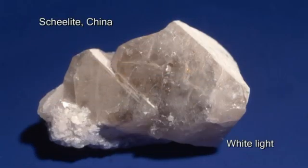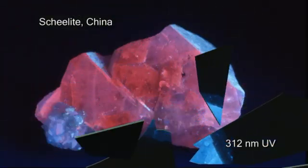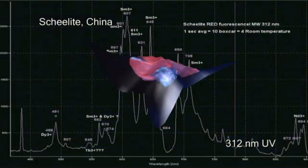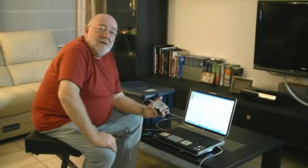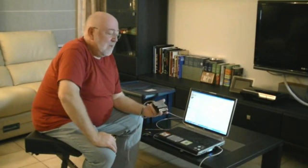Also, this chi light from China, fluorescing blue under shortwave and red under midrange ultraviolet, appears to contain lots of lanthanoid elements such as samarium, europium, dysprosium, neodymium, and others. The Ocean Optics USB 4000 gives us quite an advantage when looking at fluorescence. We see things much clearer now.